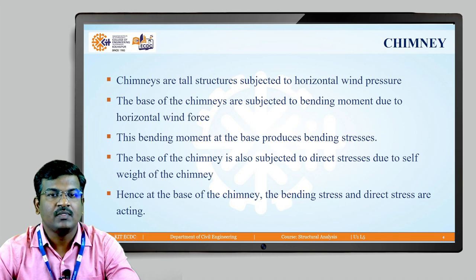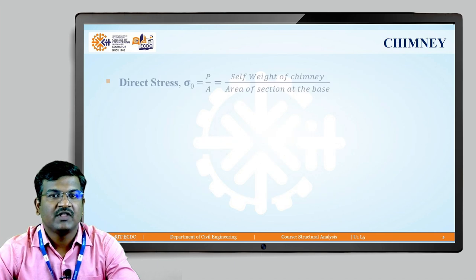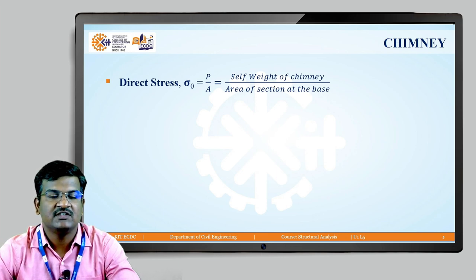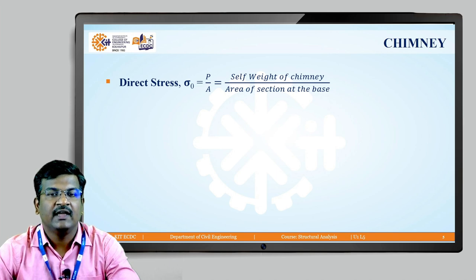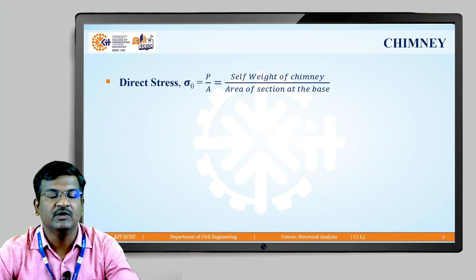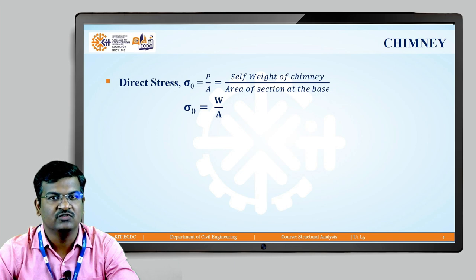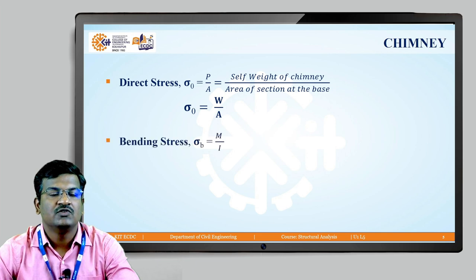So there are two types of loading acting on the chimney: horizontal wind force producing bending stress, and self-weight producing direct stress. The direct stress σ₀ is nothing but P divided by area — where P is the self-weight of the chimney acting downward, and the area is the cross-sectional area at the base. So σ₀ = W / A.